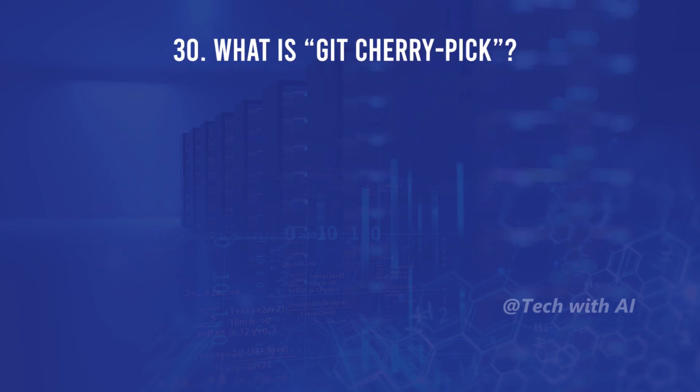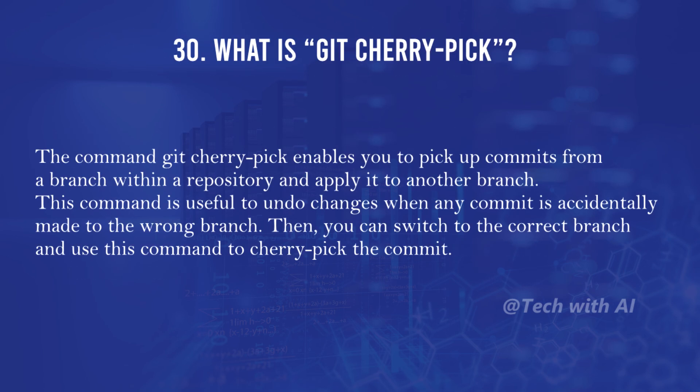What is git cherry-pick? The git cherry-pick command enables you to pick commits from a branch within a repository and apply them to another branch. This command is useful to undo changes when a commit is accidentally made to the wrong branch — you can switch to the correct branch and use cherry-pick to apply the commit.